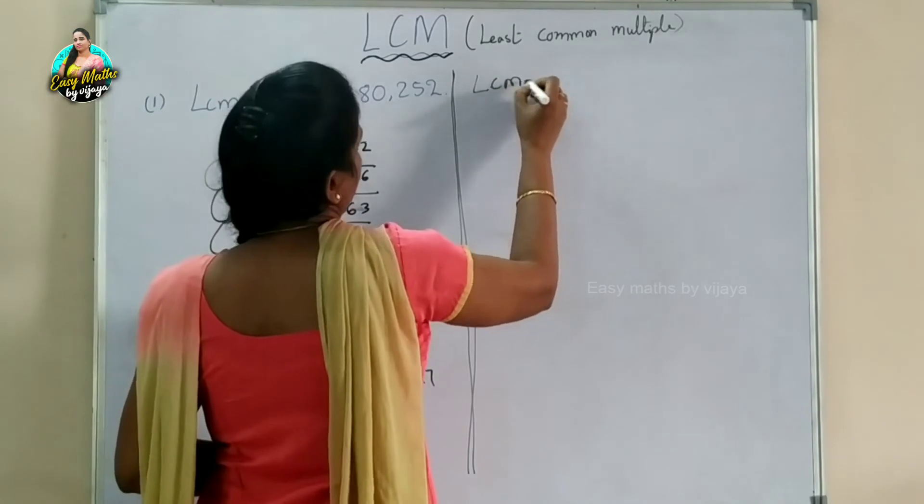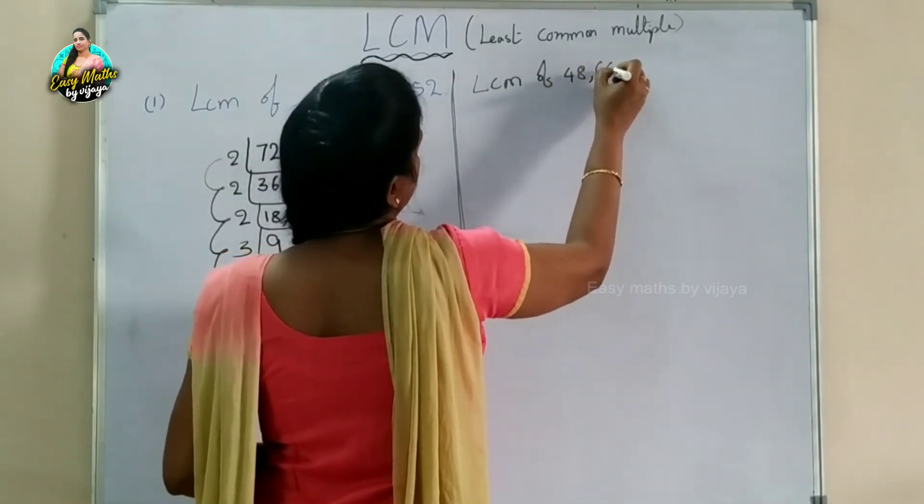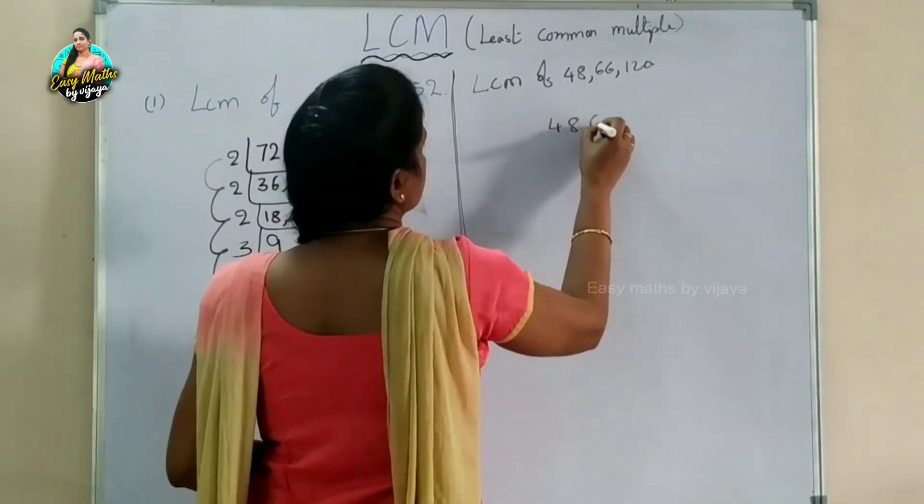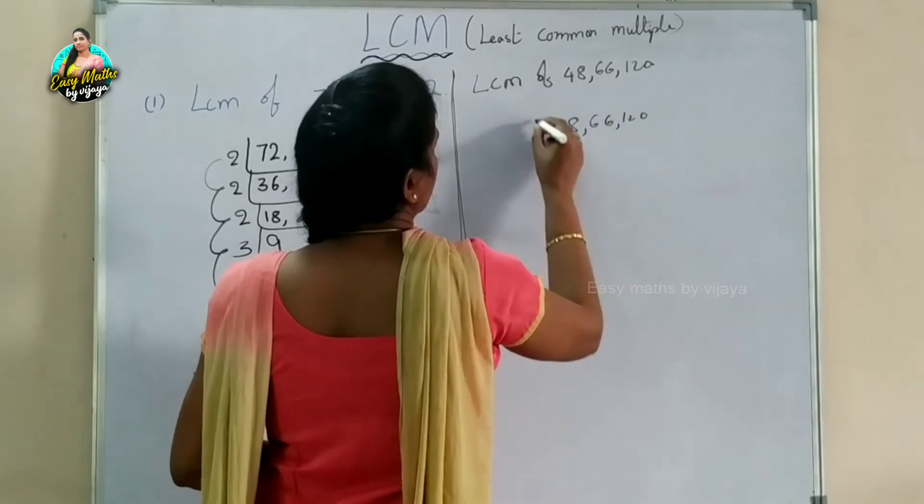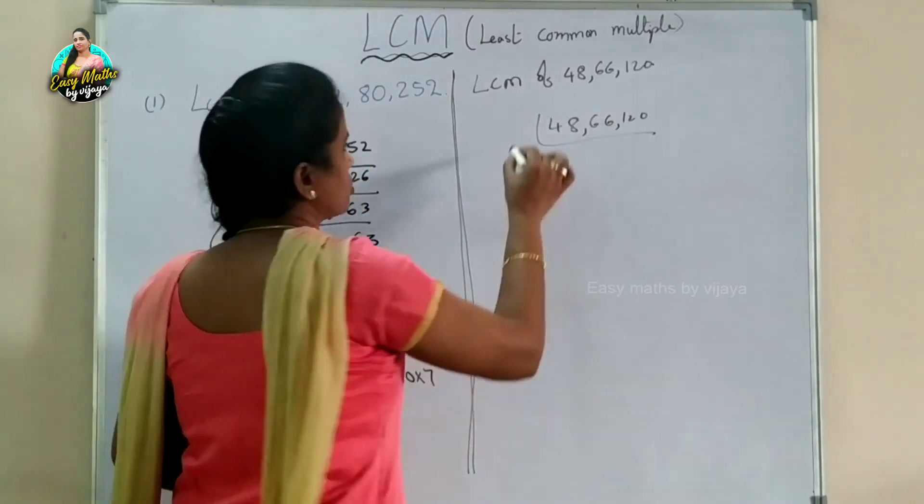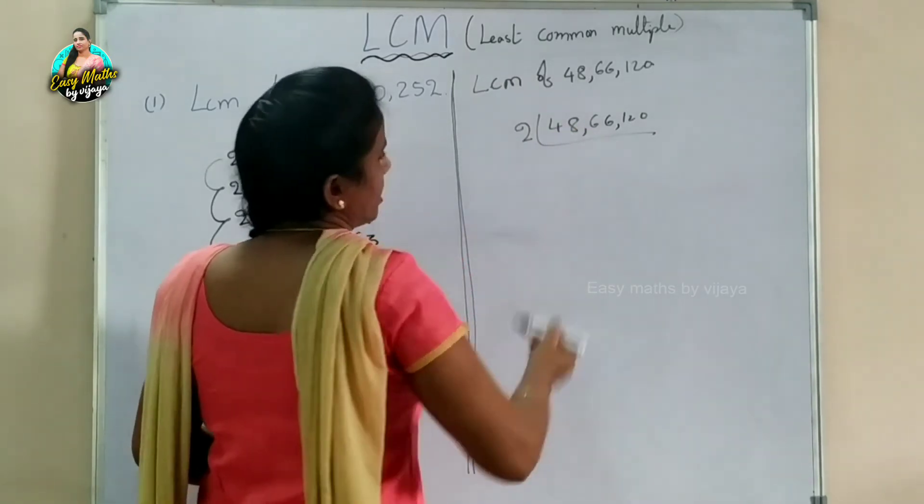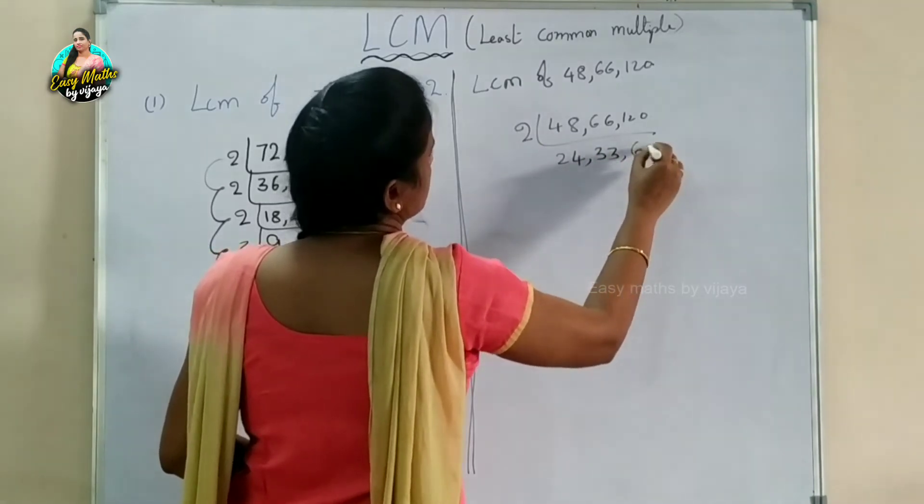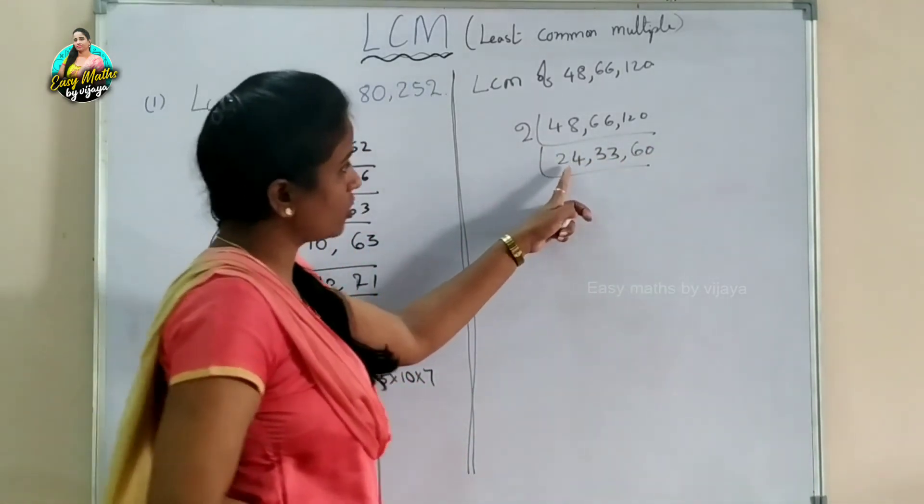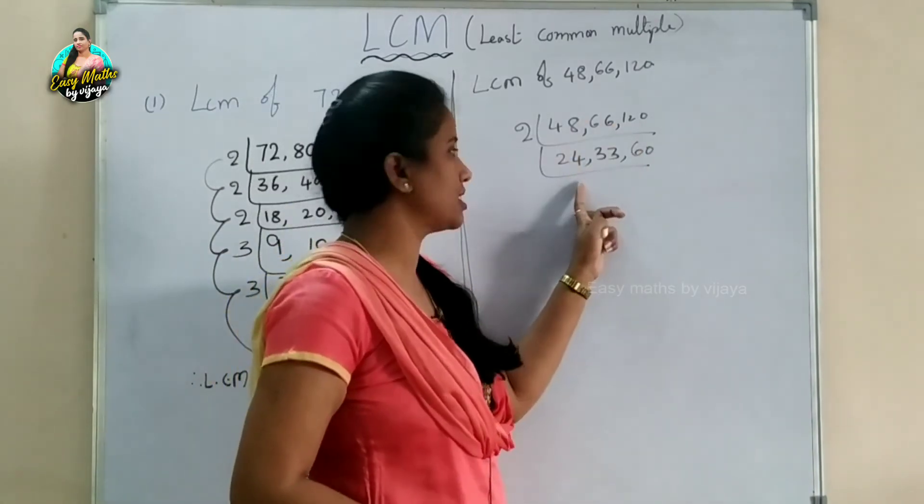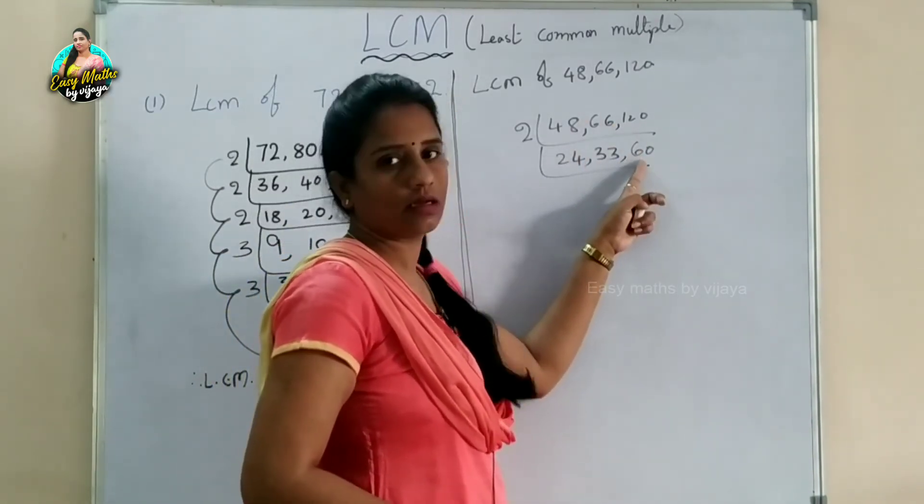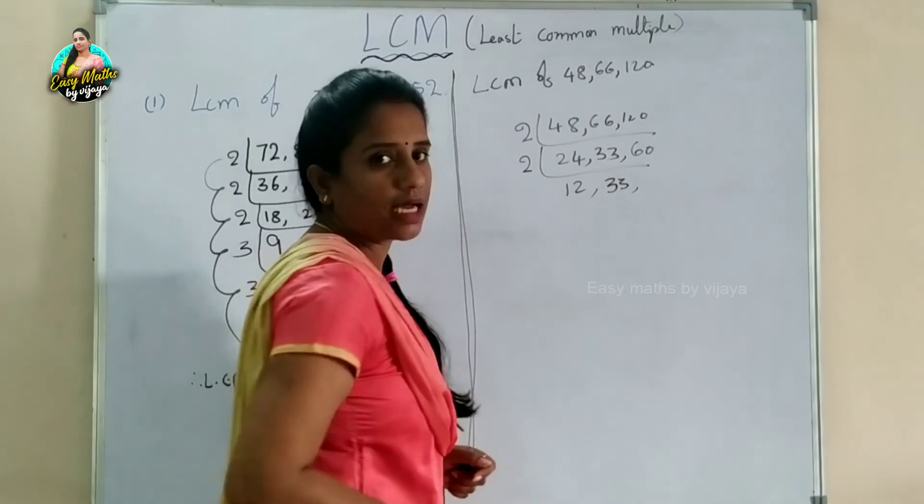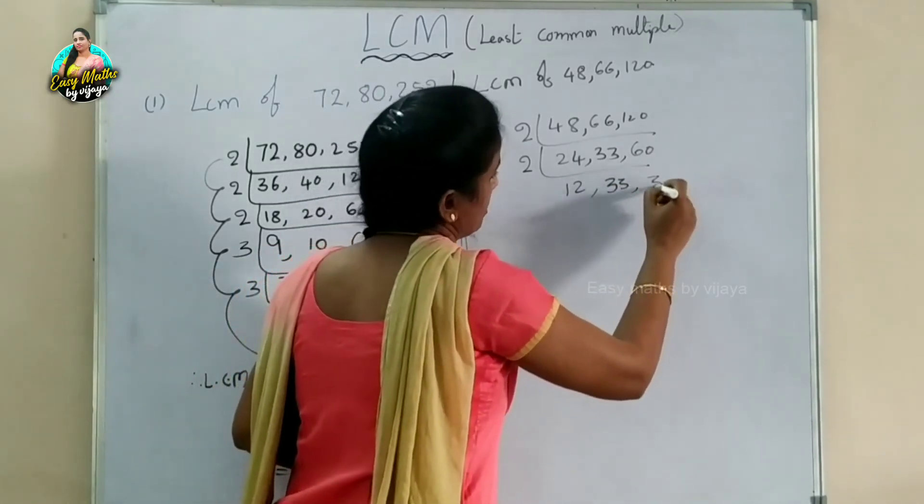Next problem: find LCM of 48, 66, and 120. We'll divide by 2. So 2 divides 48 to get 24, 66 to get 33, and 120 to get 60.